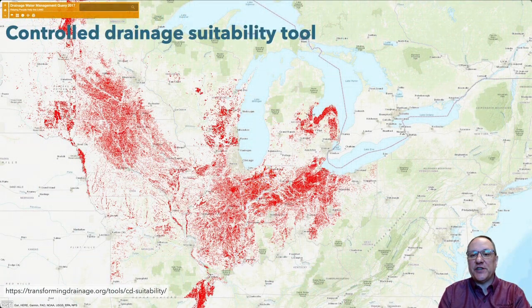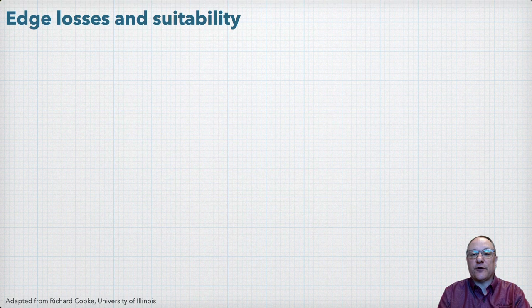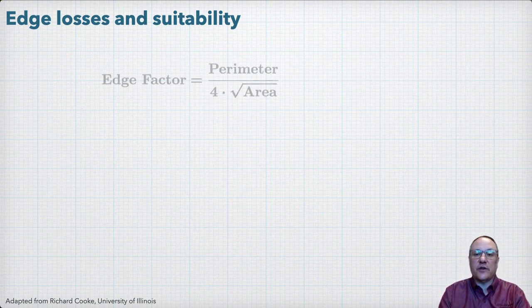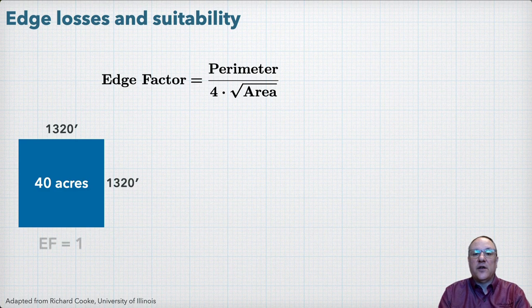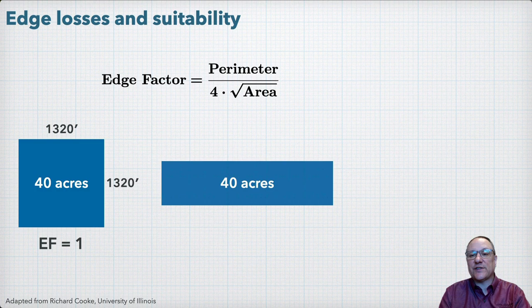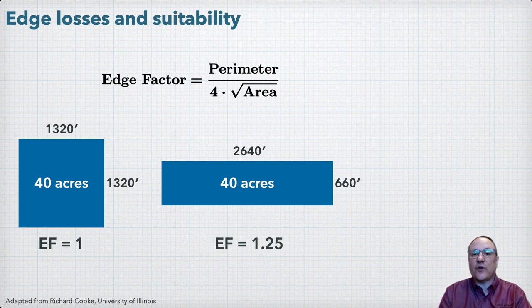A GIS tool based on geospatial data of land slopes and soils developed by the Transforming Drainage Project is one way to help identify fields potentially suitable for controlled drainage. Another consideration for suitability is field shape. If we elevate the water table in a field with controlled drainage and the surrounding fields are not using controlled drainage, that creates a gradient for lateral movement of water from the field, influenced by field shape. We can look at this using an edge factor that relates the perimeter length of the field to its area. A square field has an edge factor of 1, while a rectangular field of the same area where two sides are twice as long has an edge factor of 1.25. Since the rectangular field has greater perimeter relative to its area, the potential for lateral water losses is greater, so fields with an edge factor closer to 1 will better minimize those losses.